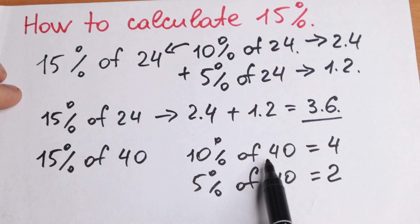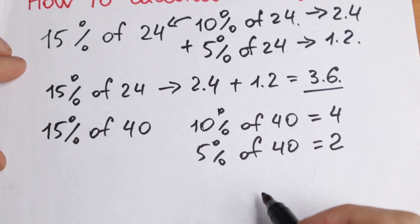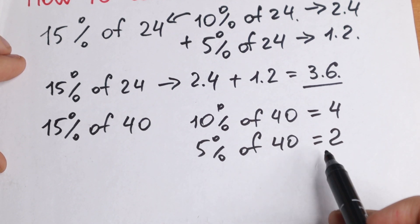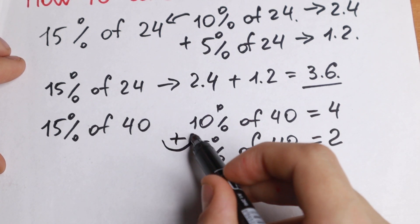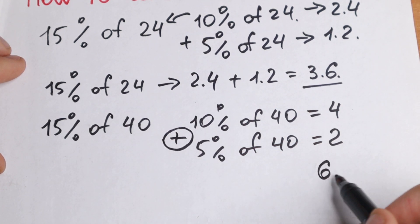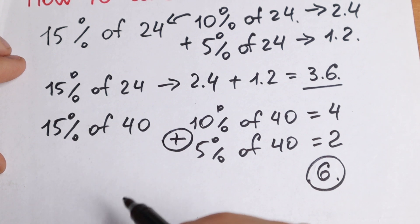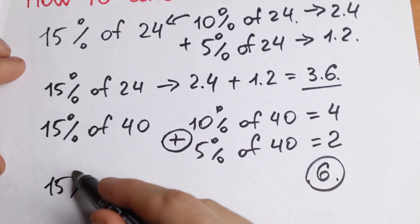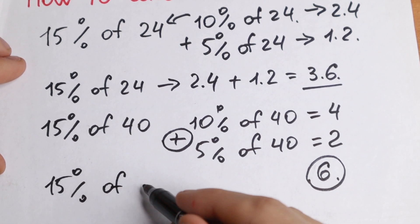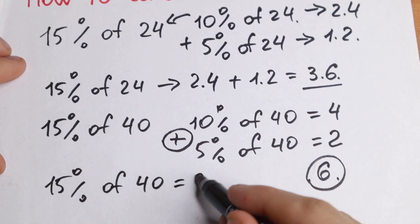So as you can see, 10% of 40 equal to 4. And 5% of 40 equal to 2. We just need to add this and our answer will be 6. So 15% of 40 equal to 6.